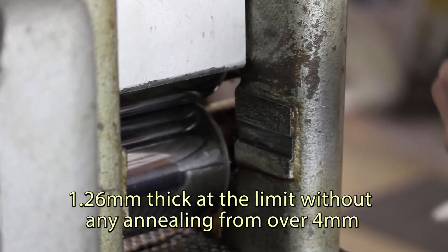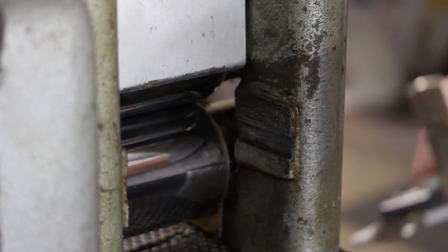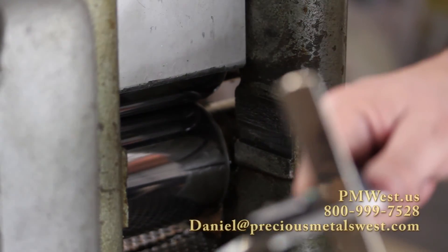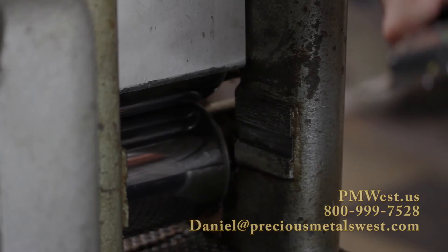At 1.26 millimeters, where we started at 4.3. We'll do the math on that later, but that's on the order of 75% thinner than when we started. That's a long, long way for 14 karat white gold.